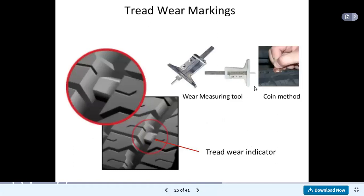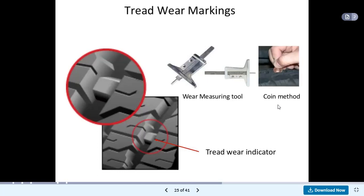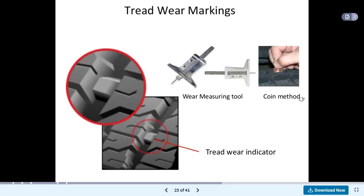Tread wear markings are also provided. To check tread wear, we use a measuring instrument called a wear measuring tool. A second method is also available — using a coin inserted into the groove to identify how much wearing has taken place. A third method is the tread wear indicator, which is placed in the gap, and how much portion gets worn out is measured with this method.